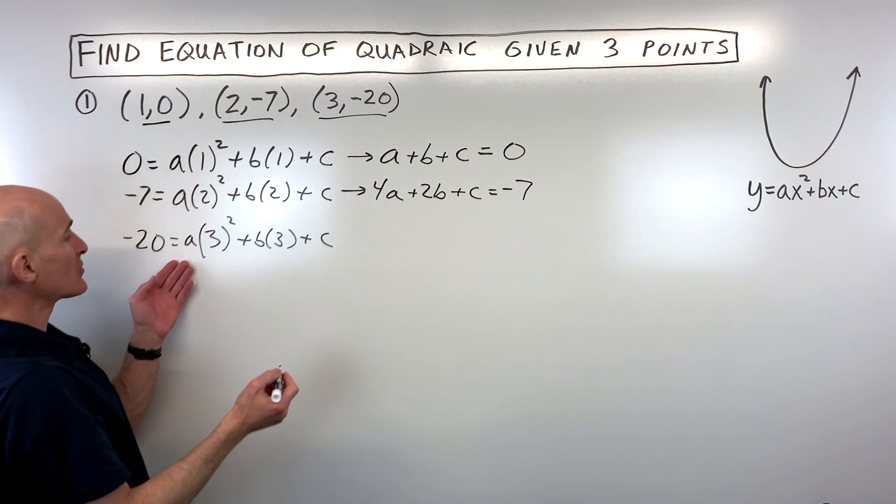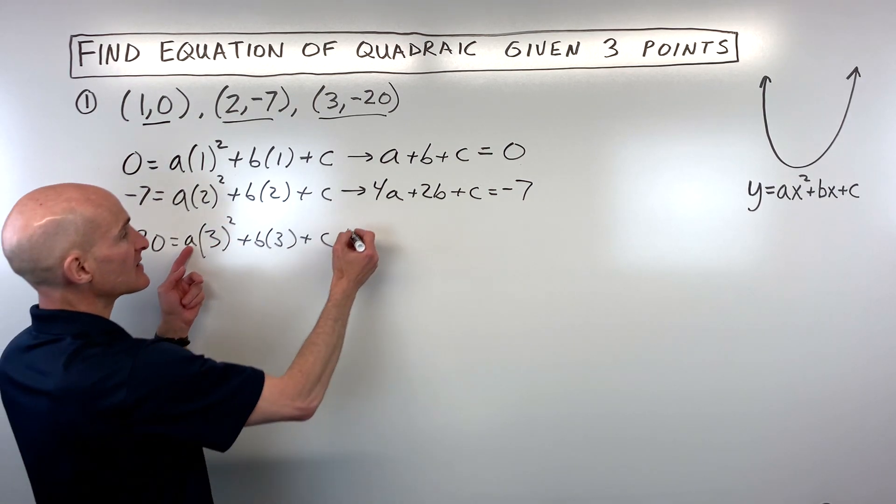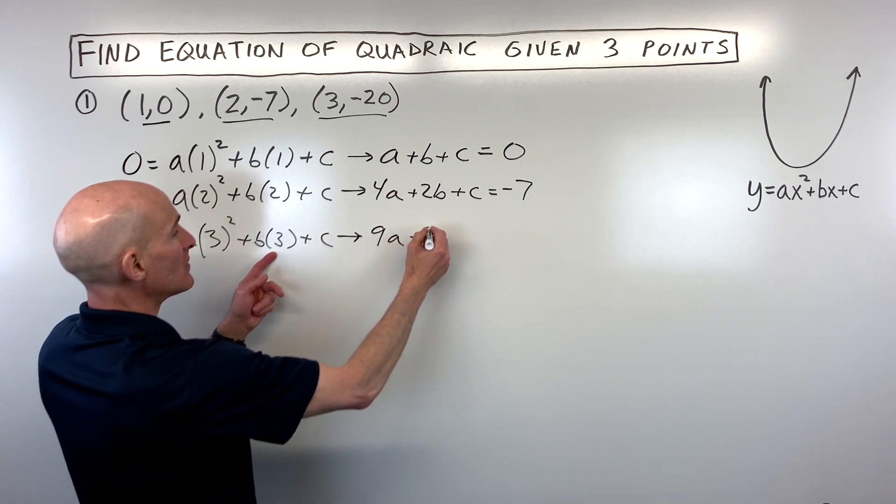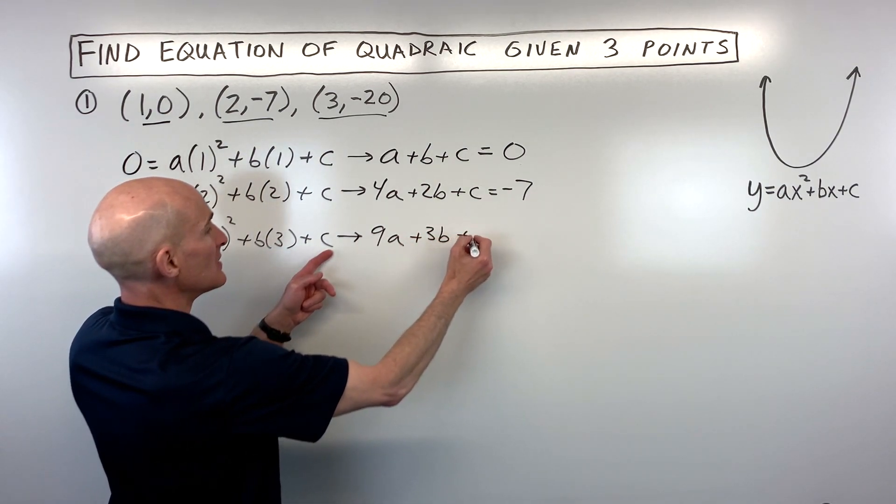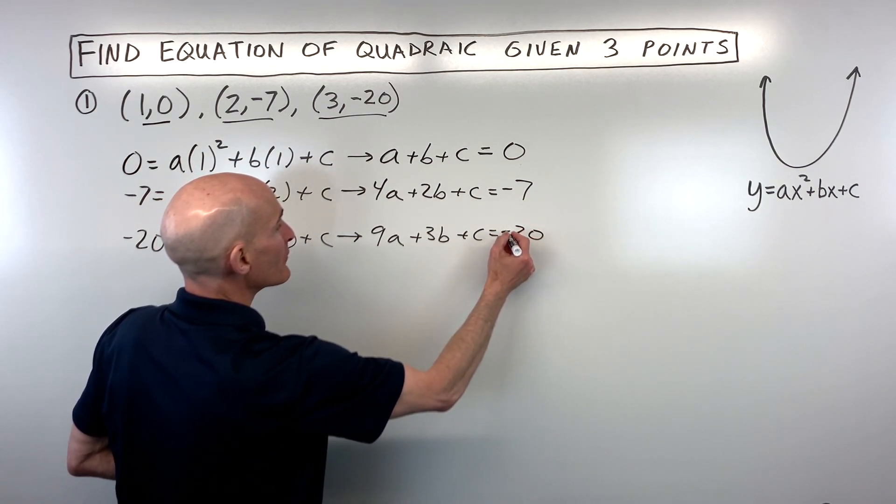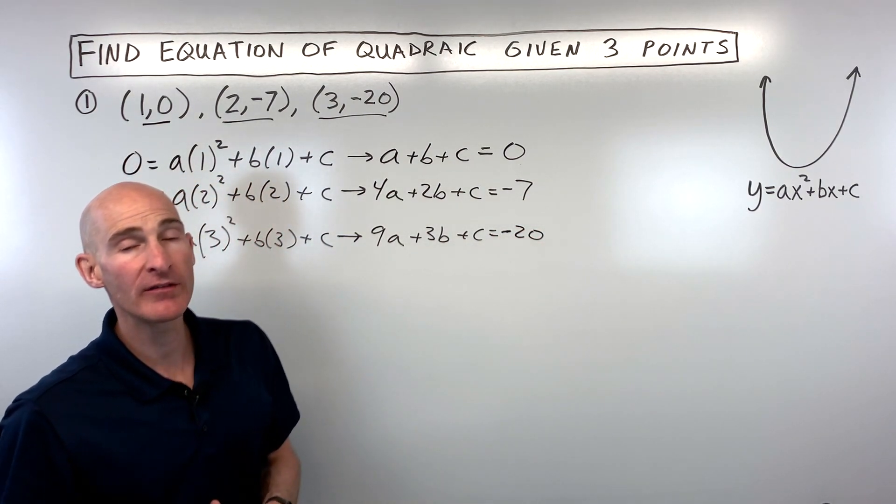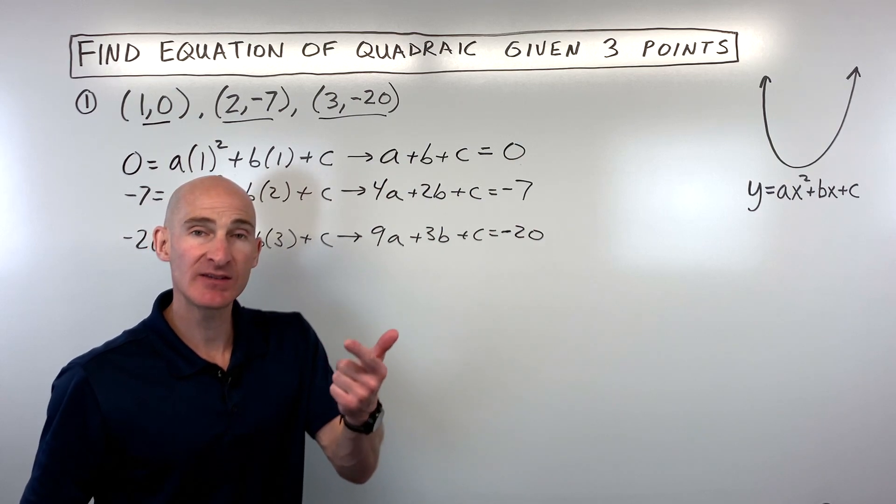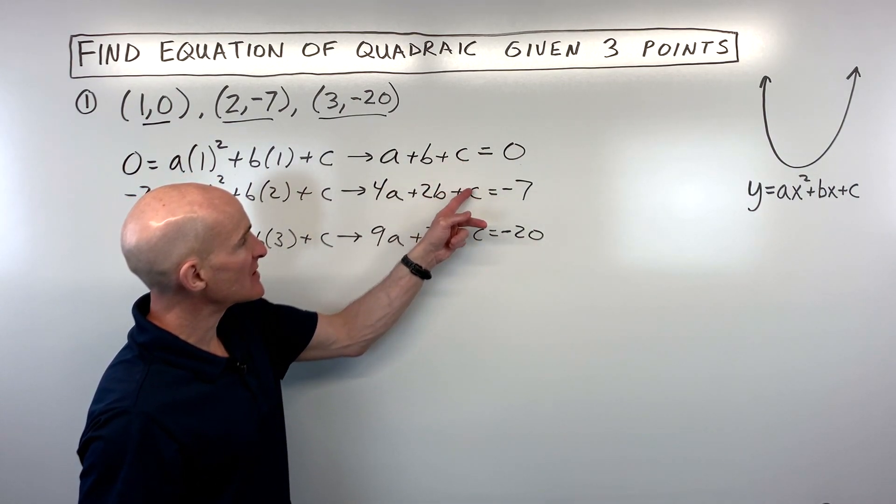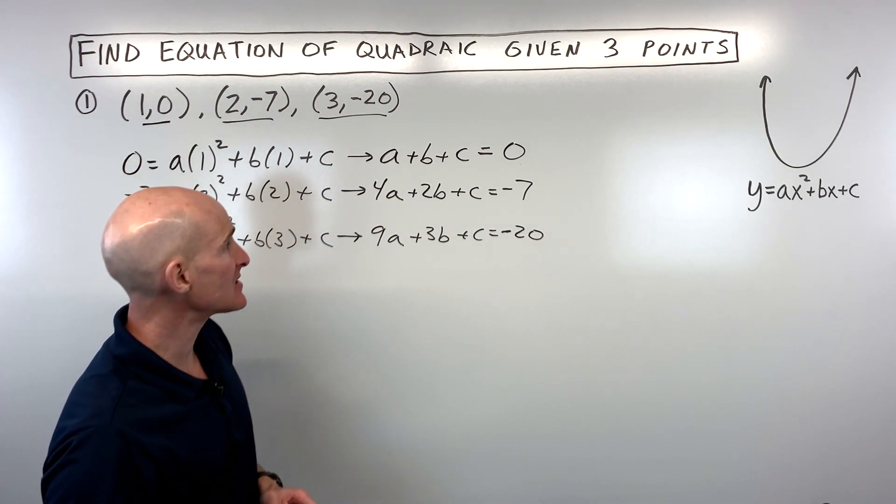And the same thing with this third equation. Three squared is nine times a which is 9a plus 3b plus c is equal to negative 20. Okay, so now we've simplified a little bit. You want to pick one of the variables to eliminate: either the a's, the b's, or the c's. I'm going to work with the c's because you can see we just have one c in each equation. So I think that's going to be the easiest.